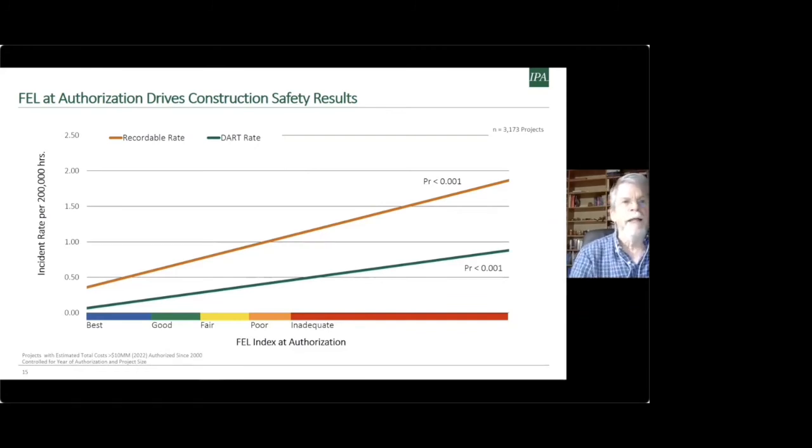So here on this chart, you can see there's a line that shows this relationship for the recordable incident rate on the top in orange, and another line showing the statistical relationship for the DART incident rate. And obviously those two incident rates are very strongly correlated because of the way they are actually overlapping to some extent. But the point of this graph is that the relationship between the level of definition and authorization of capital projects and its ultimate safety performance, which may not even begin construction for a year or two years after it's authorized, depending on the size of the project, there still is a very strong and significant relationship between definition and ultimately construction safety. So right there, we have a best practice related to capital projects that has a significant and strong direct correlation with better construction safety.